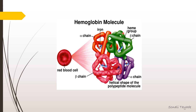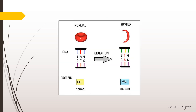The association of two wild-type alpha-globin subunits with two mutant beta-globin subunits forms hemoglobin S. Due to this hemoglobin S, the shape of the RBC changes to the sickle shape.